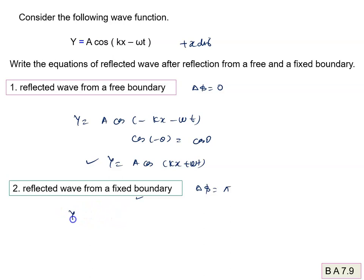For the second part with a fixed boundary, Y2 = A cos(-kx - ωt + π). We know that cos(π - θ) = -cos(θ), so Y2 = -A cos(kx + ωt). This is the answer to the second part.